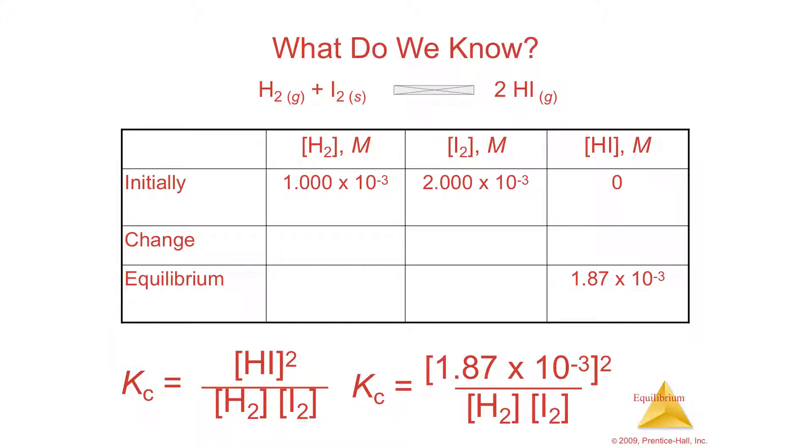So what we're going to do is, what do we know we write down first? So I'm given the concentration, first concentration of the hydrogen. I'm given the concentration, initial concentration of the iodine. And I'm given the initial, or the final concentration, or the equilibrium concentration of the product.